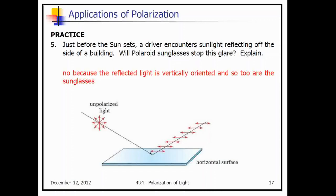Just before the sun sets, a driver encounters sunlight reflecting off the side of a building — will polarized sunglasses stop this glare? If you're wearing polarized sunglasses near tall buildings, you'll still see light reflected off of large buildings because that's vertically oriented light — it goes through the polarized lens, so none of that light is blocked.